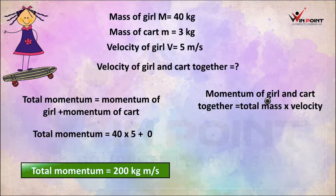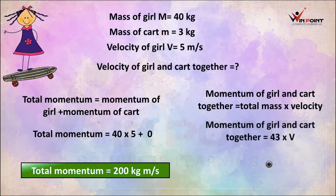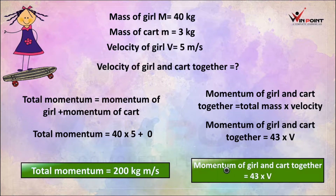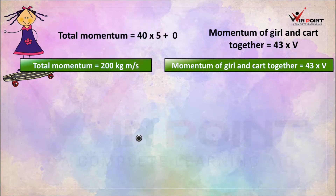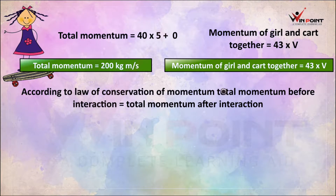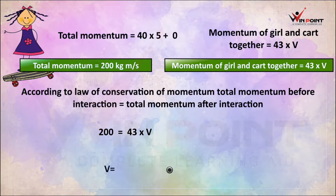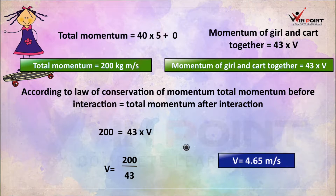Now we find the momentum of the girl and cart together after interaction. Total mass = 40 + 3 = 43 kg. Momentum after = 43 × v. According to the law of conservation of momentum, 200 = 43 × v, so v = 200 ÷ 43 = 4.65 m/s. The velocity of the girl and cart together is 4.65 m/s.